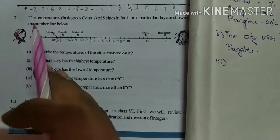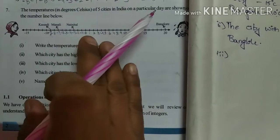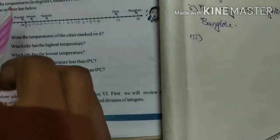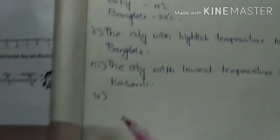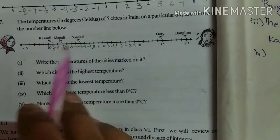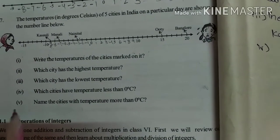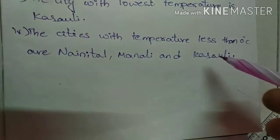Minus 9 comes at the most left of the number line, comparing to the 5 cities. The left side is decreasing in integers, and the right side goes on increasing. So the lowest temperature city is Kasavali. The fourth question: which cities have temperature less than 0 degrees? Less than 0 means negative — there are 3 cities: Naintal, Manali, and Kasavali.